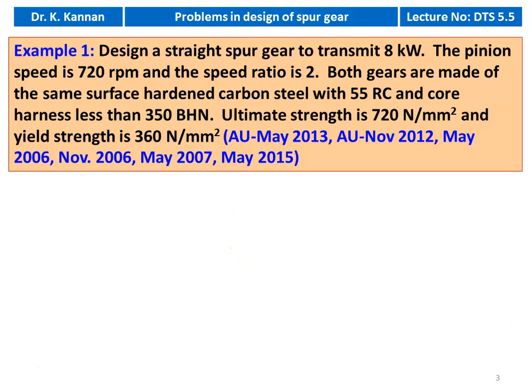The first example was appearing in many university examinations: May 2013, November 2012, May 2006, November 2006, May 2007, and May 2015. Design a straight spur gear to transmit 8 kW. The pinion speed is 720 RPM and the speed ratio is 2. Both gears are made of the same material — carbon steel with 55 RC Rockwell hardness and core hardness less than 350 BHN.